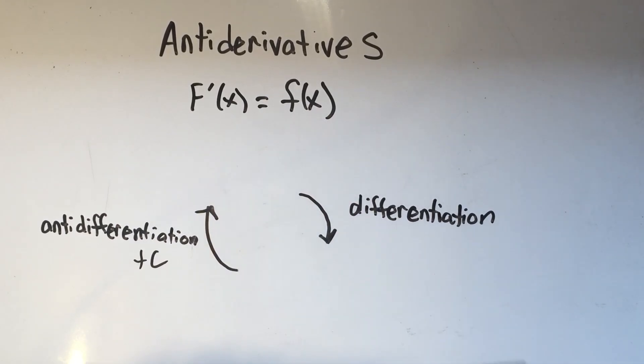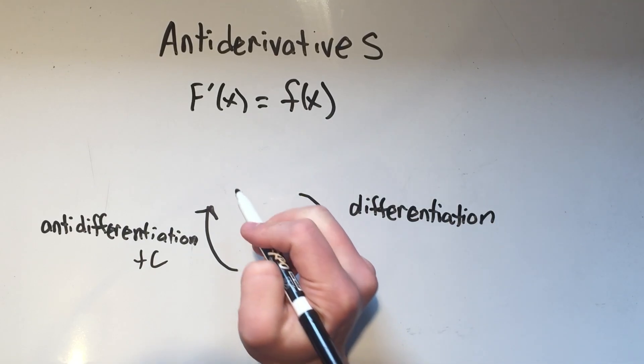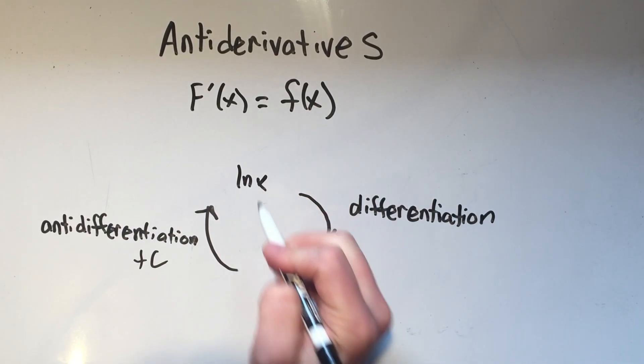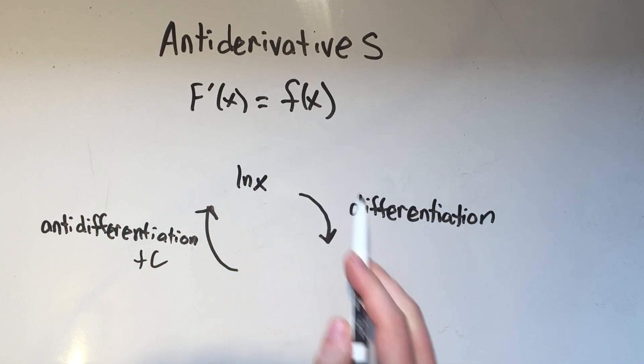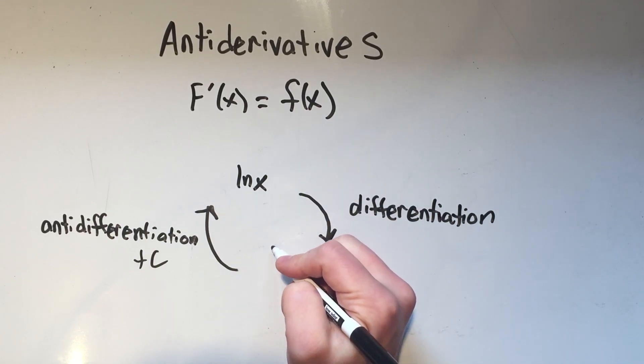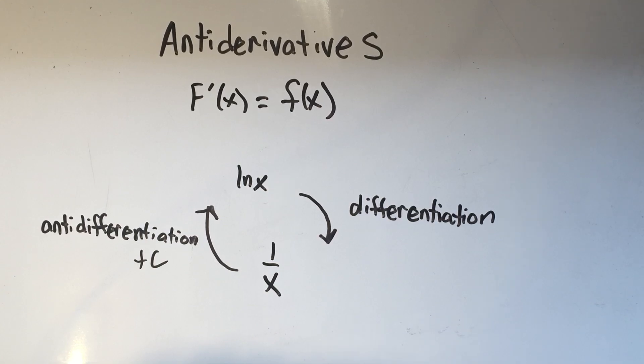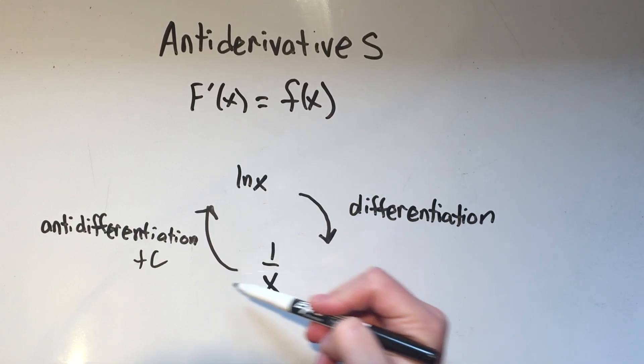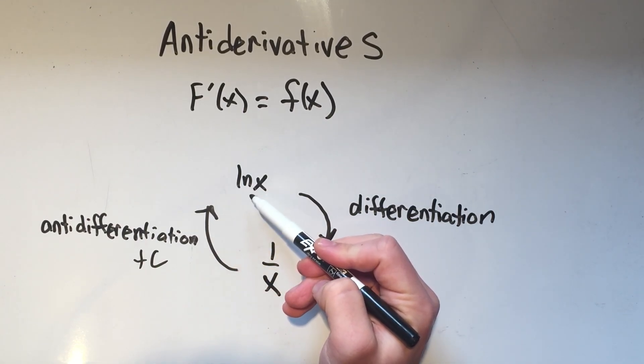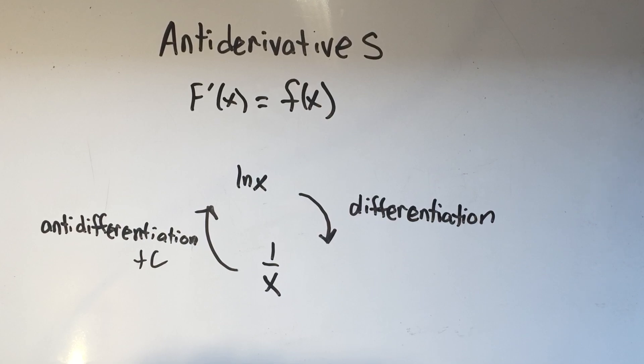Just another quick example. Let's say I had the natural log of x. The derivative of the natural log of x is 1 over x. That must mean that the anti-derivative of 1 over x is the natural log of x. It's just kind of a circular process.